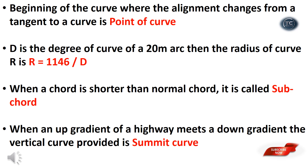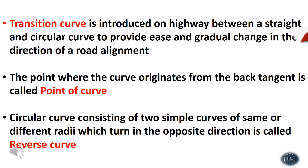When an upgrade of a highway meets a downgrade, the vertical curve provided is a summit curve. A transition curve is introduced on a highway between a straight and a circular curve to provide ease and gradual change in the direction of road alignment. Over-turning of vehicles on a curve can be avoided by using a transition curve.